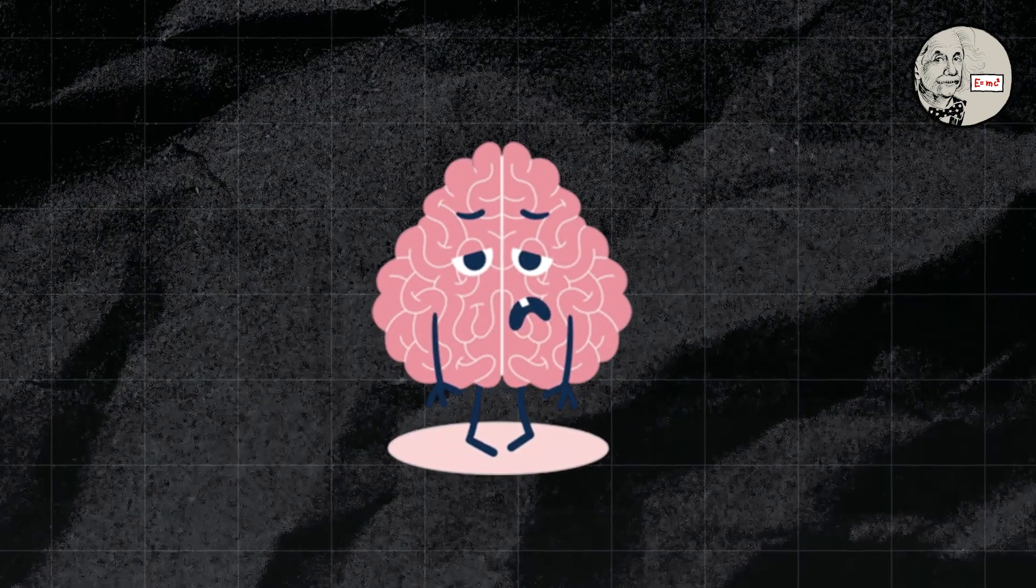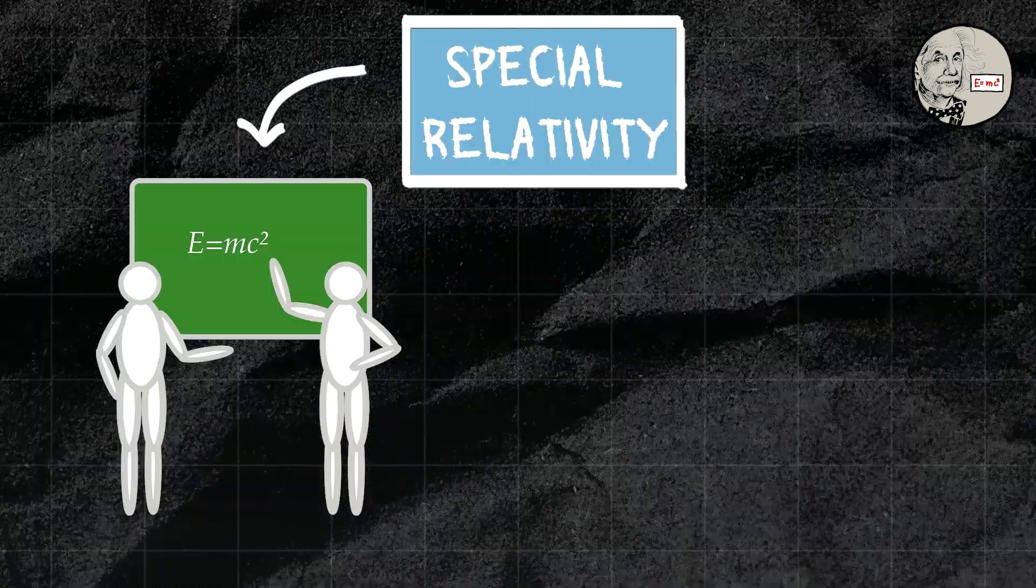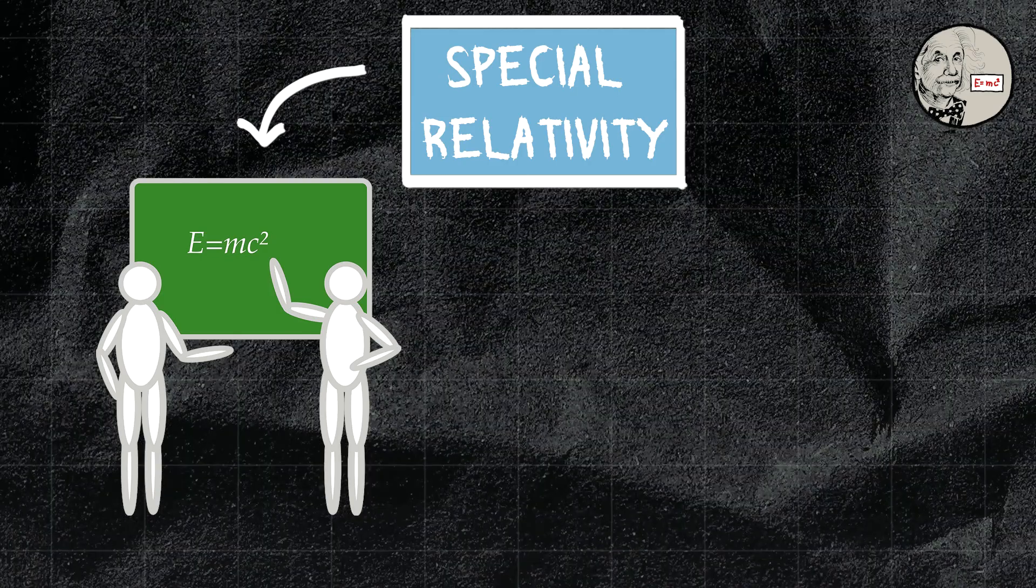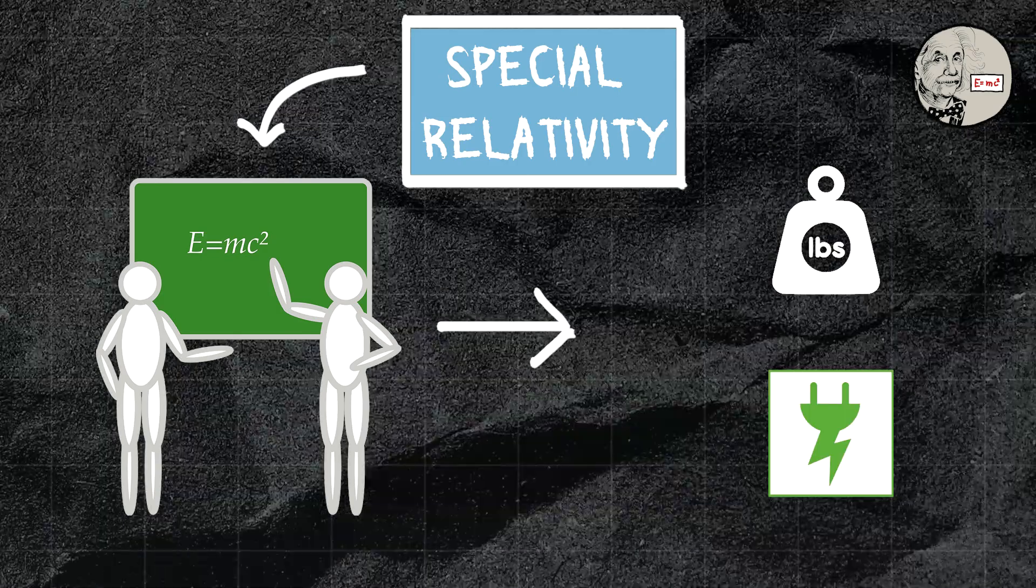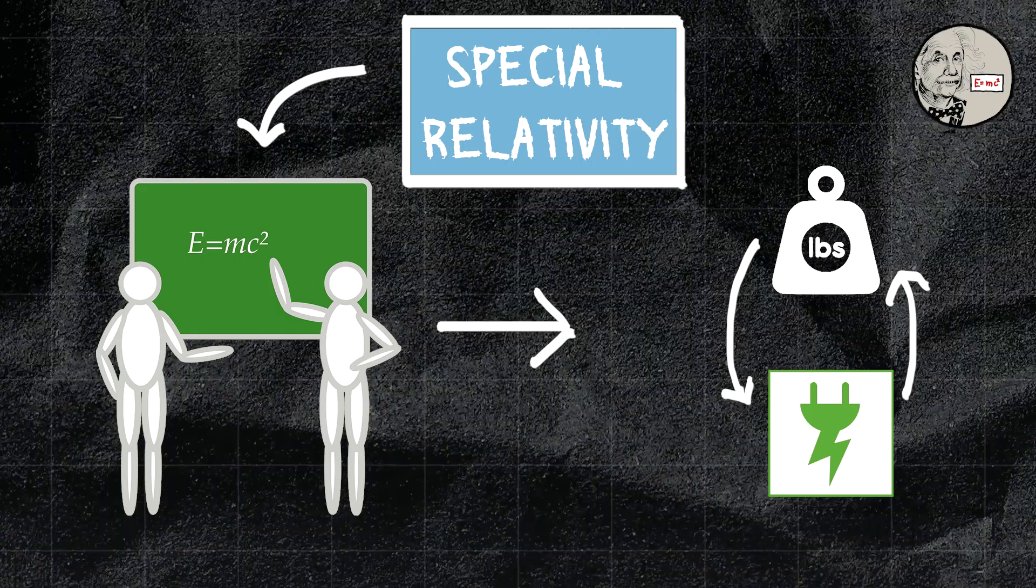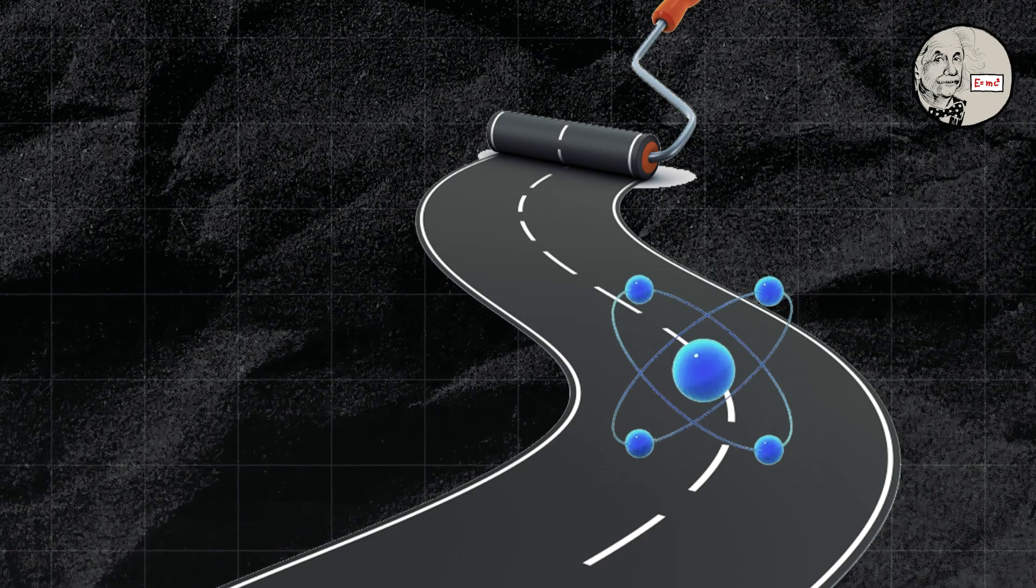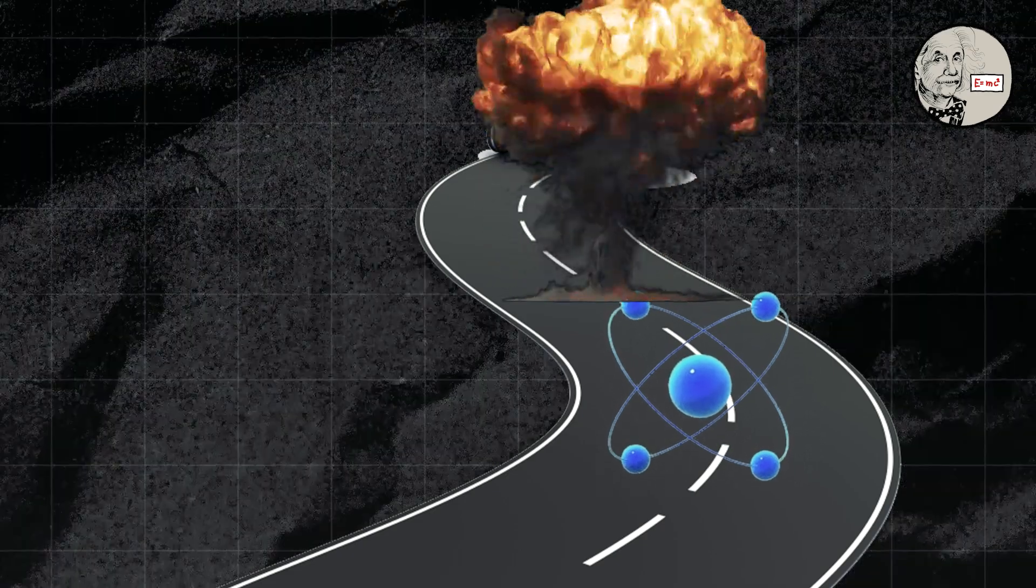Mind-bending, isn't it? But wait, there's more. Special relativity also introduces the famous equation E equals MC squared, which tells us mass and energy are interchangeable. This equation has massive implications, paving the way for understanding nuclear reactions and the development of the nuclear bomb.